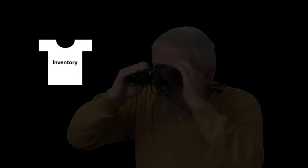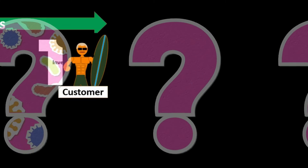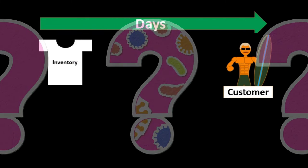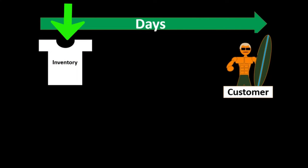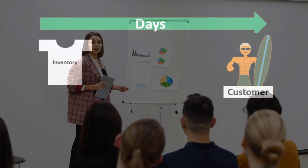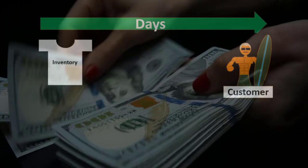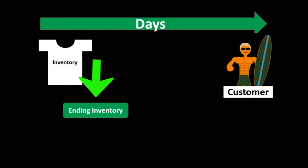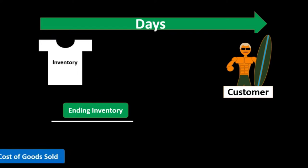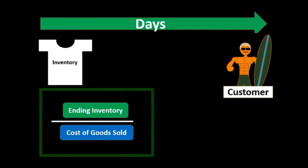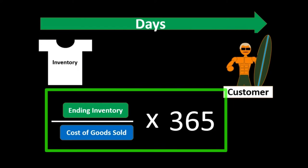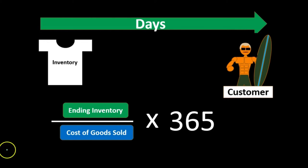Let's take a look at an example. We're going to assume we sell t-shirts, and the question is: how many days on average will it take to make that t-shirt convert to a sale to a customer, in the form of sales on account or sales for cash? That's going to be the calculation of ending inventory — the balance sheet account — divided by cost of goods sold, the income statement account, taking that number and then multiplying it times the number of days in the year, that being 365.